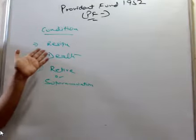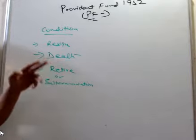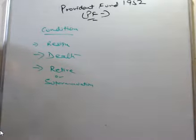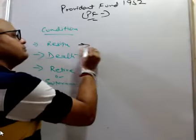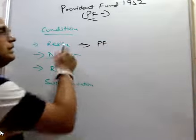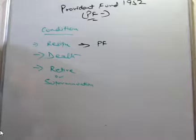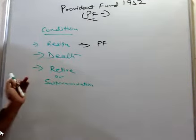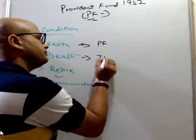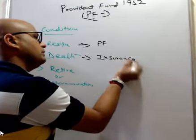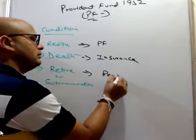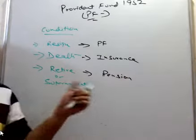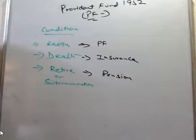In these three cases, PF provides monetary benefit. So that in case of candidate resign, death, or retire, if PF is terminated, they get the money. In the death case, insurance. In the retirement, pension. This covers under the Provident Fund Act 1952.